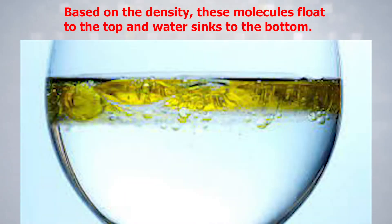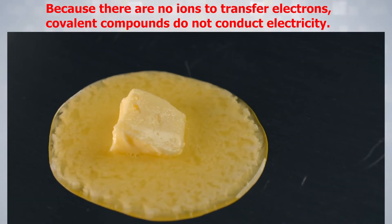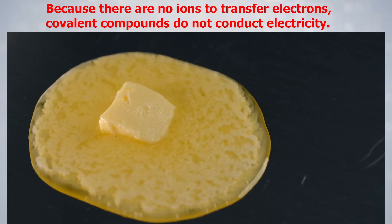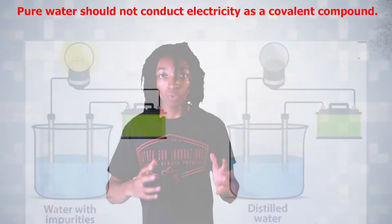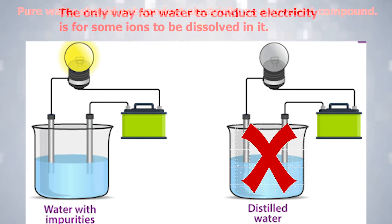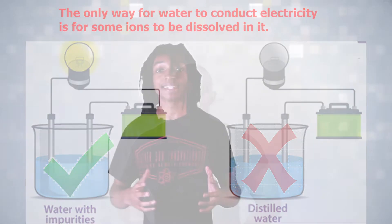Based on density, these molecules float to the top and the water sinks to the bottom. Because there are no ions to transfer electrons, covalent compounds do not conduct electricity. Pure water should not conduct electricity as a covalent compound. The only way for water to conduct electricity is for some ions to be dissolved in it.